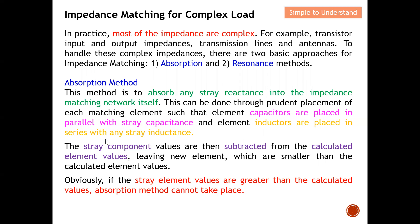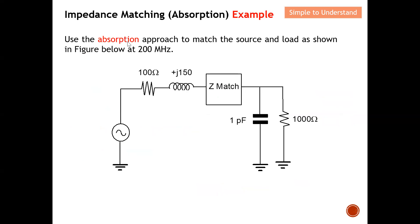The stray component values are extracted from the calculated element values, leaving new elements which are smaller than the calculated element values. However, if the stray element value is greater than the calculated value, the absorption method cannot take place. In that case, you can consider using the resonant method to design the impedance matching. Let's go a bit deeper to understand the absorption method by working out an example.